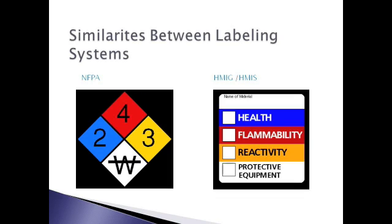Similarities between the NFPA and the HMIS or HMIG: both systems have three color-coded fields to indicate flammability (red), health (blue), and reactivity (yellow) hazards associated with the material. Both systems use a scale of five numbers ranging from zero to four to indicate the severity of a hazard, with zero being the least and four being the most hazardous.